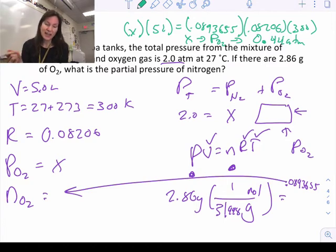So then for the final answer, what's the partial pressure of nitrogen? Now we know this number is 0.44. So what plus 0.44 is 2.0? If we subtract that away we end up getting that the pressure due to just nitrogen is 1.56 atmospheres.